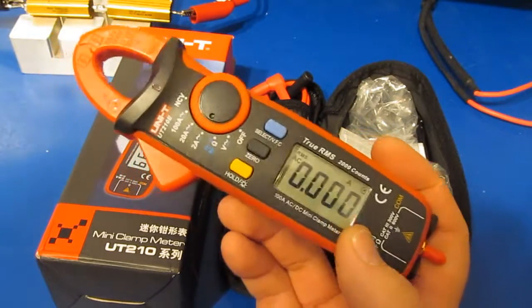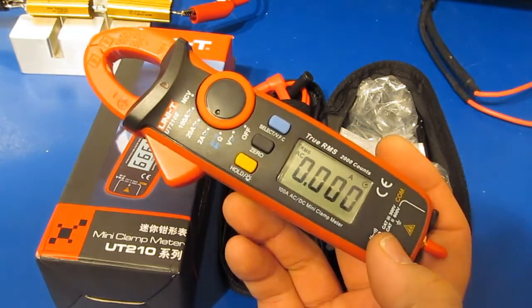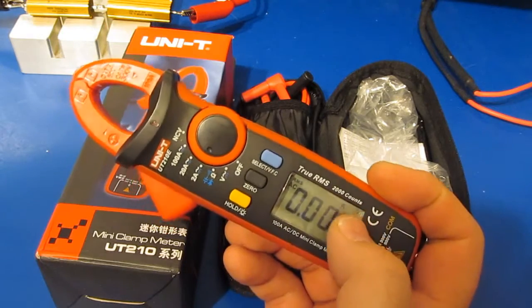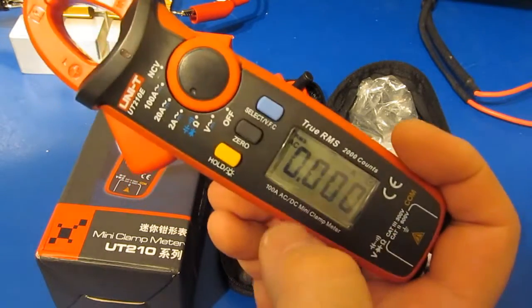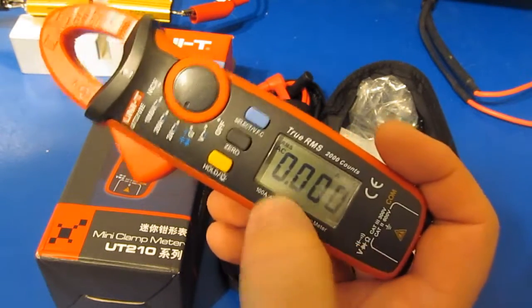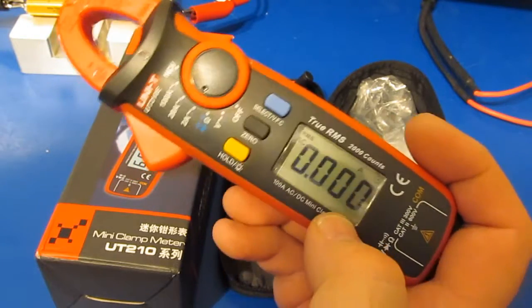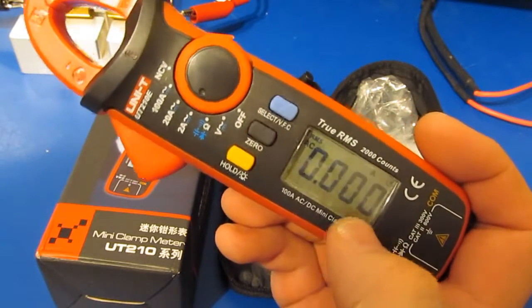It's an AC/DC current clamp and it's RMS. You can see it's a 2,000 counts. What really makes it nice is that it has this 2 amp range and it's capable of reading down to 1 milliamp.